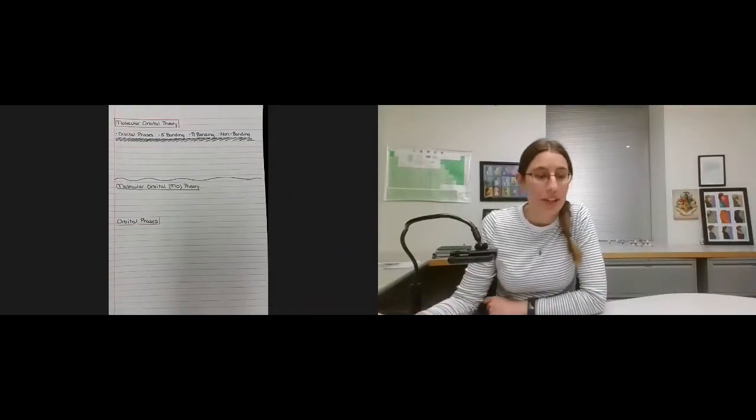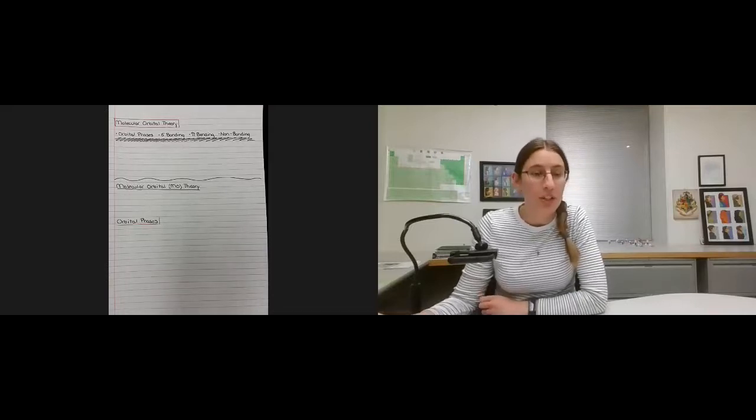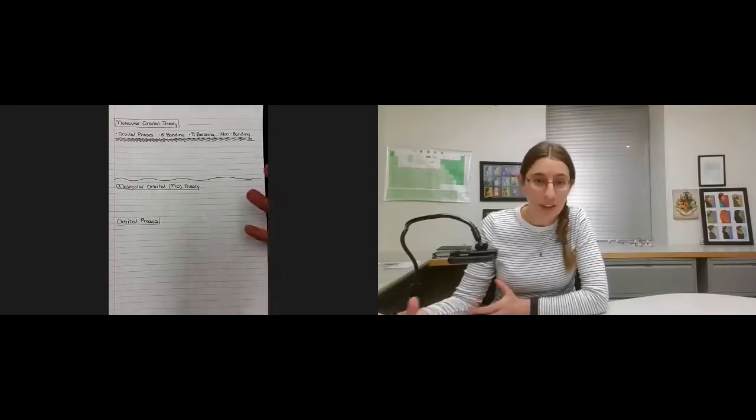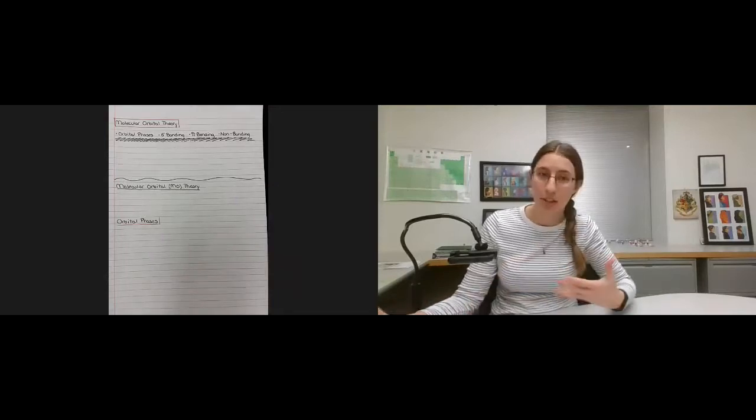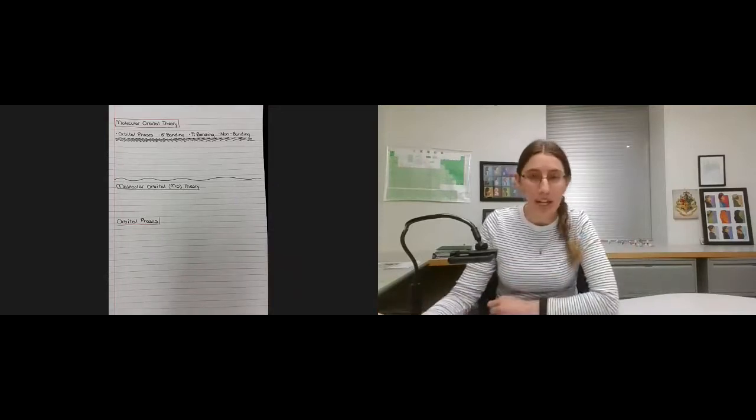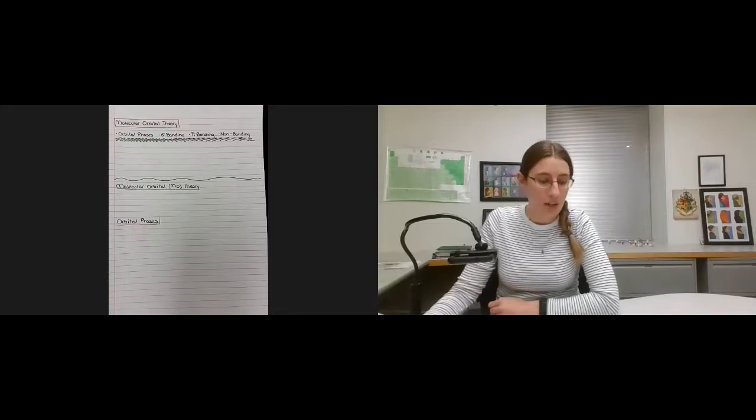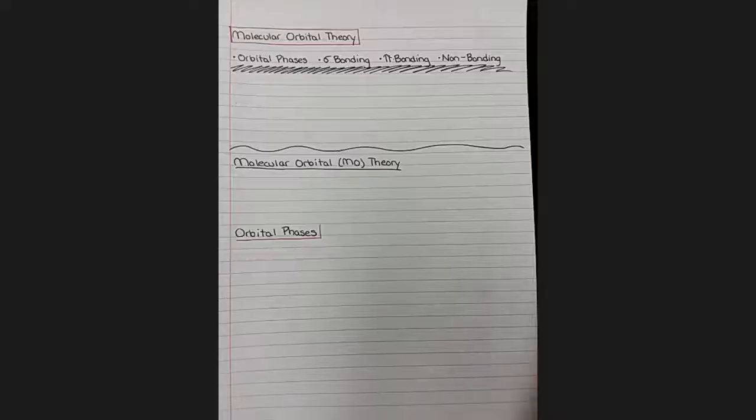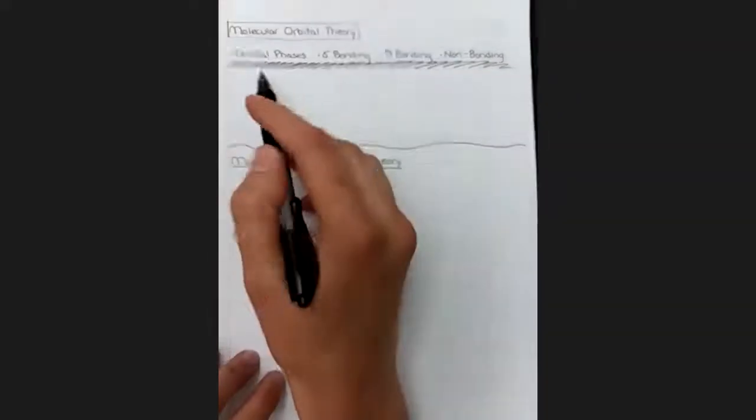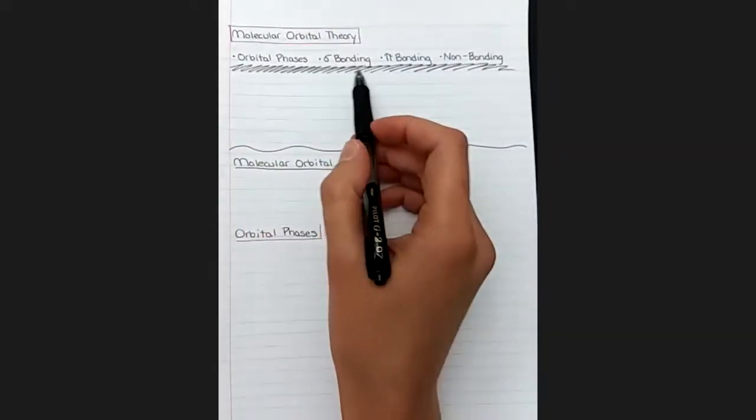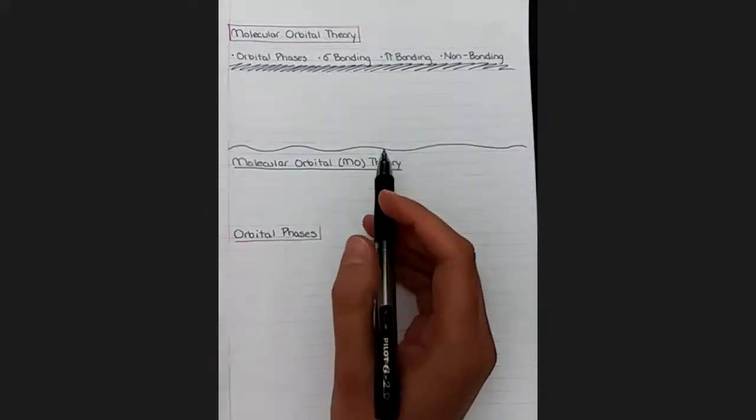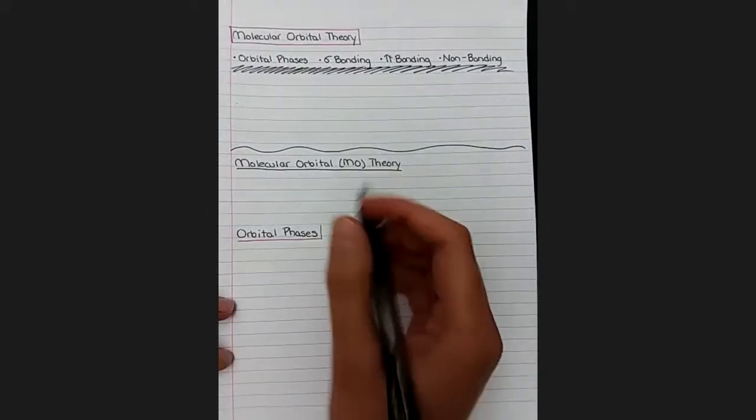This is the next video in a chapter on advanced theories of bonding. We have spent the last few videos talking all about valence bond theory and its addendum hybridization, and now we're going to move on to the next important theory of bonding, which is called molecular orbital theory. We'll talk about orbital phases, sigma bonding, pi bonding, and non-bonding within the context of molecular orbital theory.